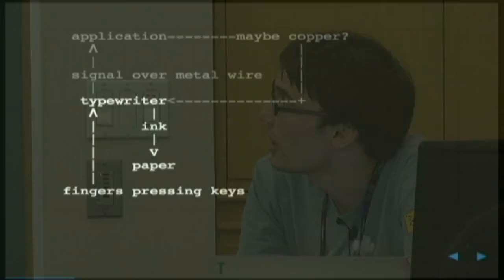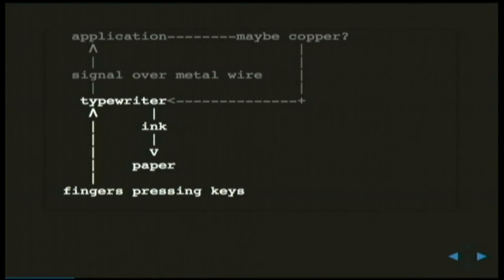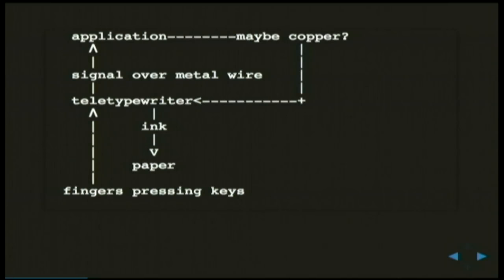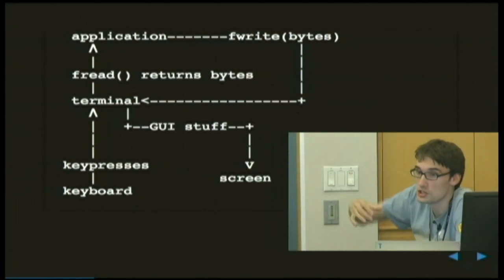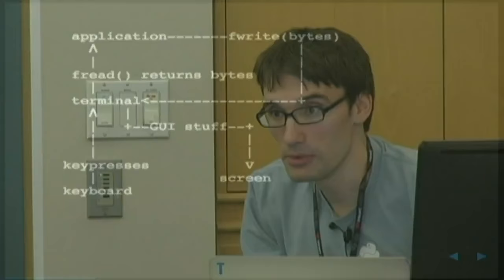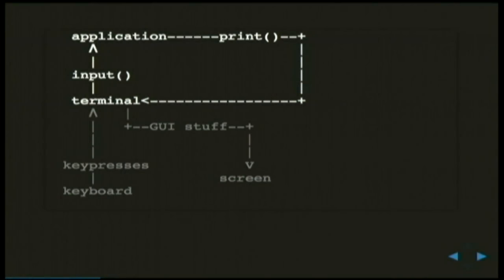Here's a simple model to think about: this is a typewriter — fingers press keys, ink hits the page. We add to that the signal over a metal wire that talks to an application, which is maybe a person or a computer, and that sends information back, possibly causing more printing. In the modernized version, we'll use the system calls fread and fwrite instead. Unless you have a real video terminal, you're using a terminal emulator, which gets stuff to the screen. And since this is a Python talk, I'm really going to talk about print and input — Python 3 input, which is like raw_input in Python 2.